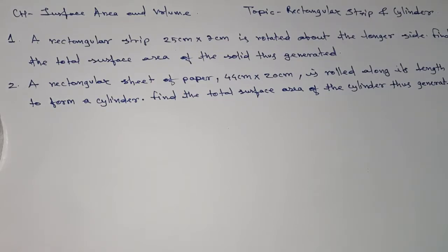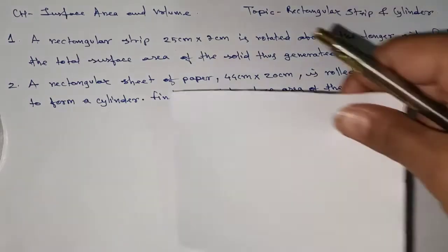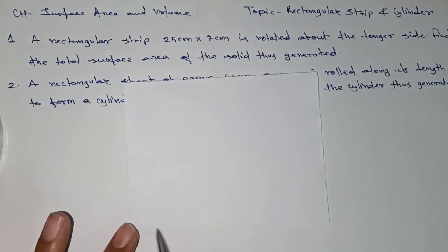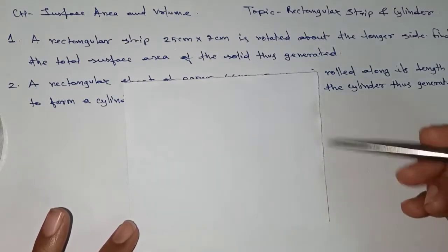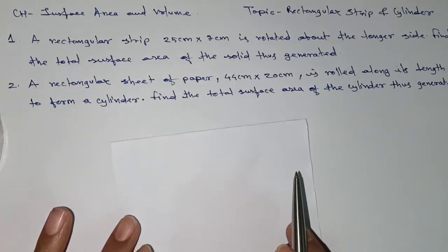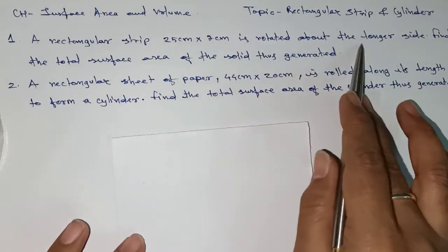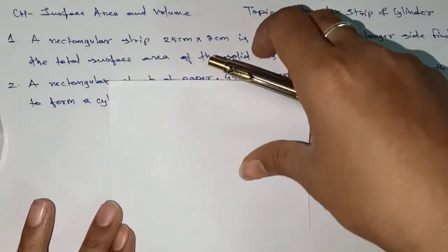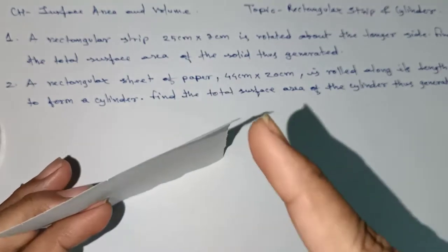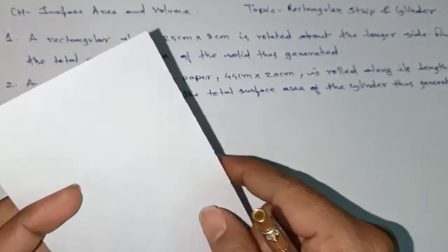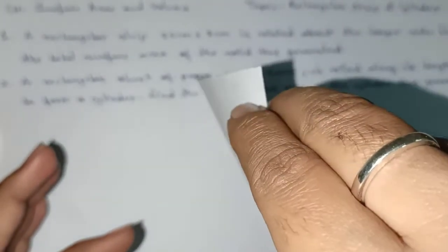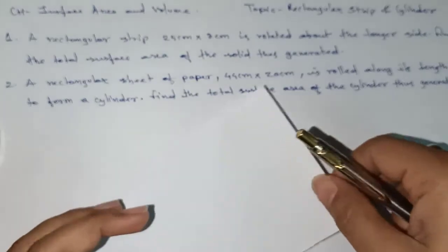For the first one, the rectangular strip is 25 centimeters and 7 centimeters. Now what they are asking for the first one: rotate about the longer side. The longer side will be 25 centimeters — take it as the axis and rotate in this direction.